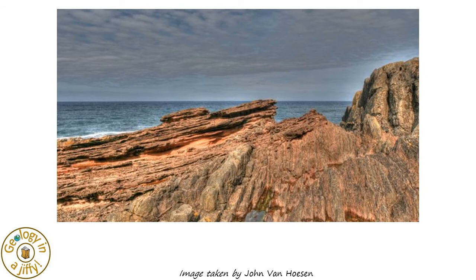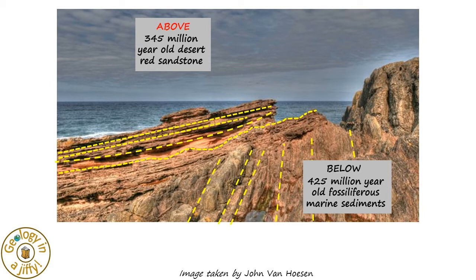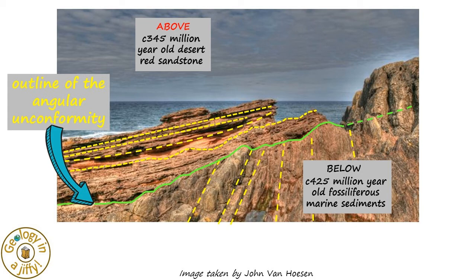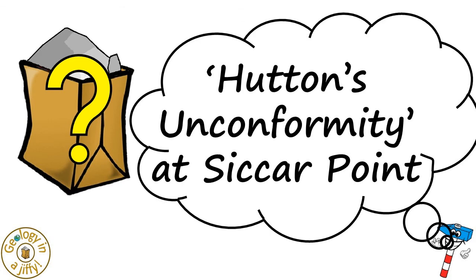When viewed from the side, the angular unconformity is very clear to see. At the base of the rocks are the 425 million year old grey coloured fossiliferous marine sediments. Lying at a much shallower angle above these are the red coloured 345 million year old desert sandstones. It is easy to follow the trace of the angular unconformity between these different rocks, remembering that this boundary represents about 65 million years. At the base of the desert sandstone rocks is a basal conglomerate, containing pebbles of the older grey coloured rocks, having been scoured from the ancient land surface and washed along by flash floods, before being deposited and preserved forever for us to see here at Siccar Point.